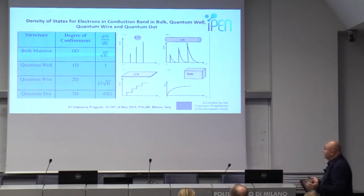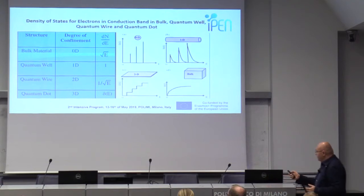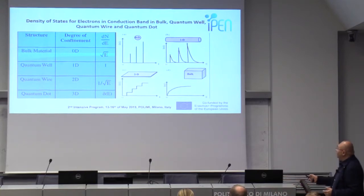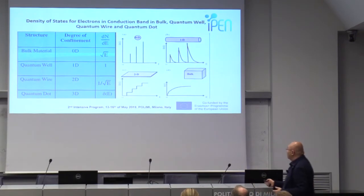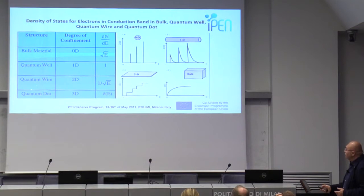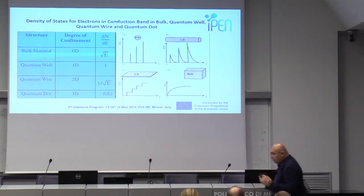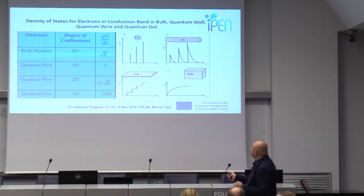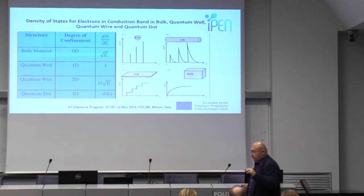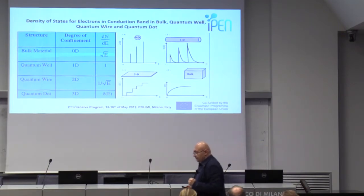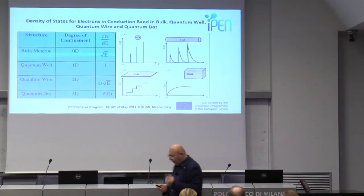In bulk material, the density of states is proportional to the square root of energy. In a quantum well, it is a step function; in a quantum wire, it is proportional to 1 over the square root of E. In a quantum dot, where we have strong confinement in all three directions, the density of states consists of delta functions. This is why quantum dots are sometimes called artificial atoms.